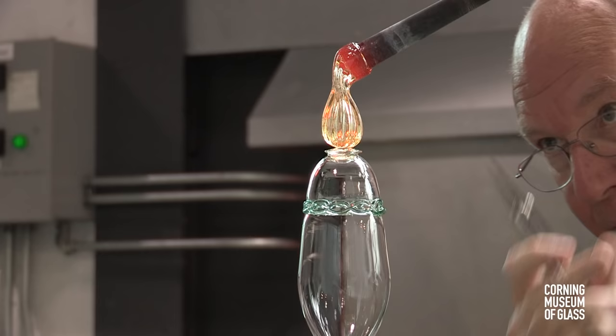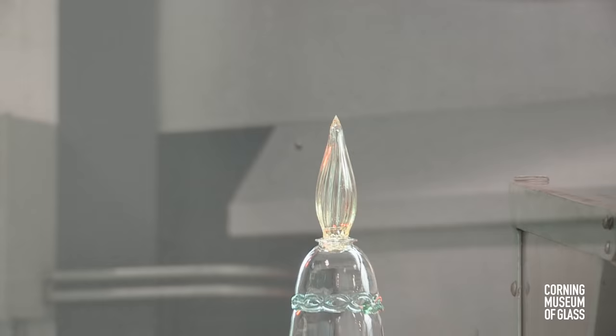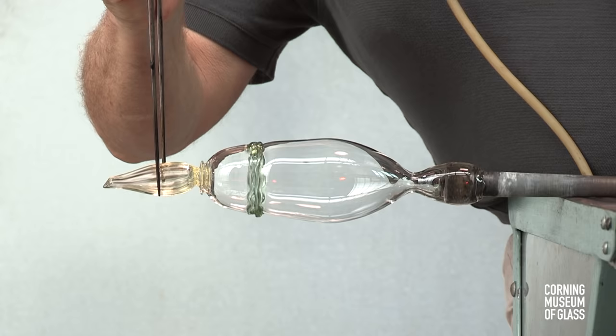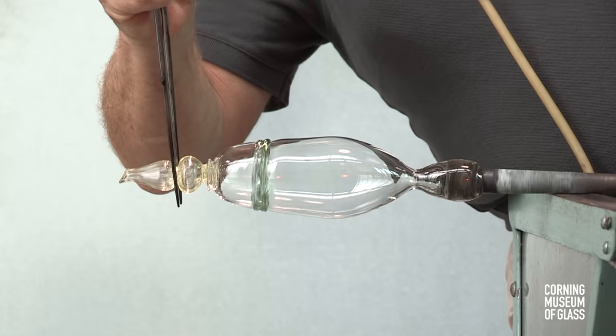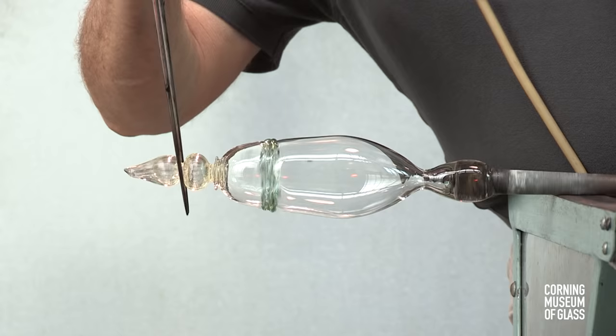The bubble is lowered in place, centered carefully, and cut free of its blowpipe. The bubble is tooled to become an oblate spheroid. The excess is trimmed from the end.